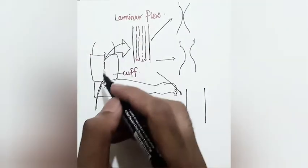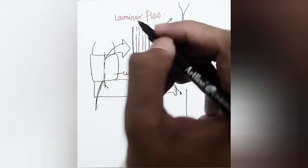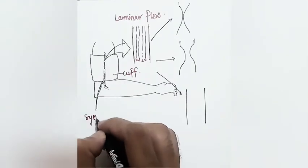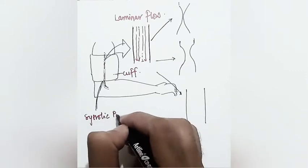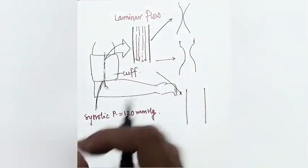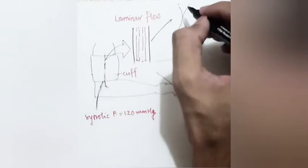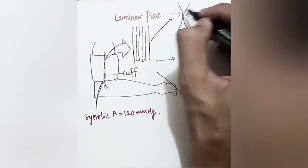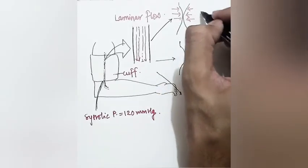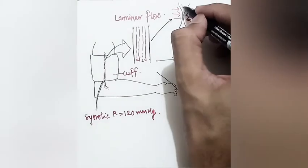When cuff pressure is increased above the systolic pressure — say above 120 mmHg for an ideal patient — the vessel is completely occluded because the heart's pressure cannot overcome the cuff pressure, so no blood flows through.